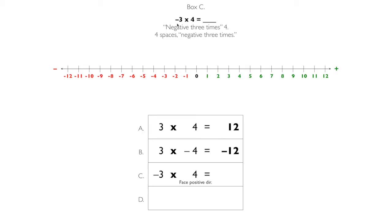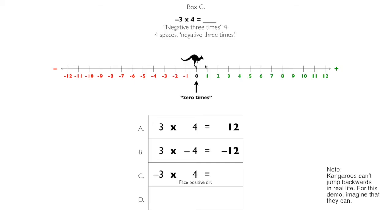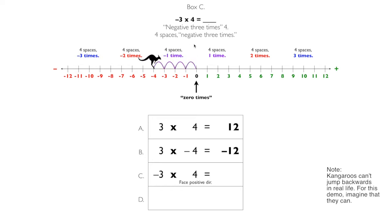Now for box C: negative three times four, pronounced 'negative three times four.' So jump four spaces negative three times. We'll start at zero, and notice that we're facing the positive direction because we have positive four. And this is where we need to be careful — we're not jumping four spaces three times, we're jumping four spaces negative three times. So the kangaroo won't be jumping forward; she'll be jumping backwards. Four spaces negative one time, four spaces negative two times, four spaces negative three times. Negative three times four equals negative twelve. Write it down.